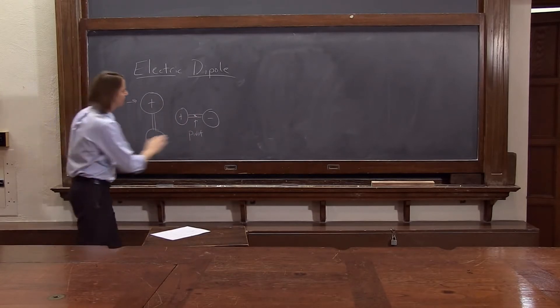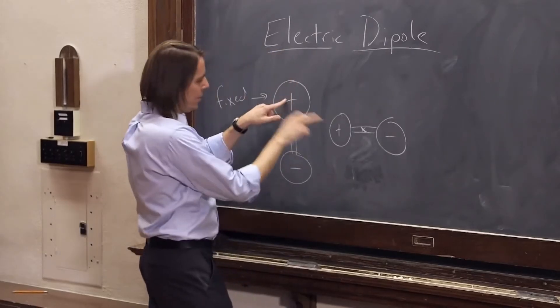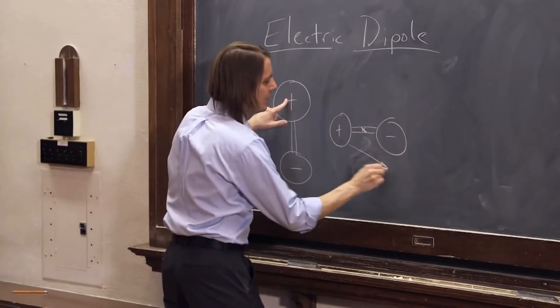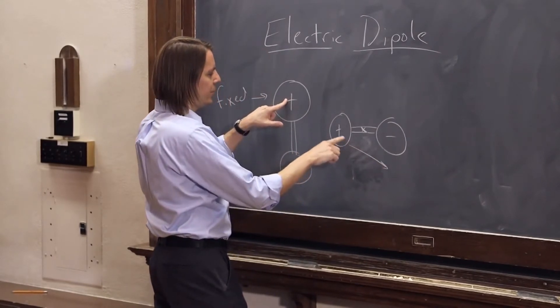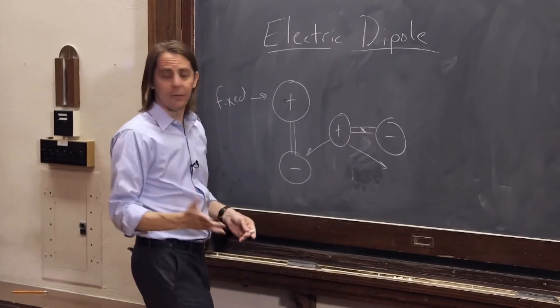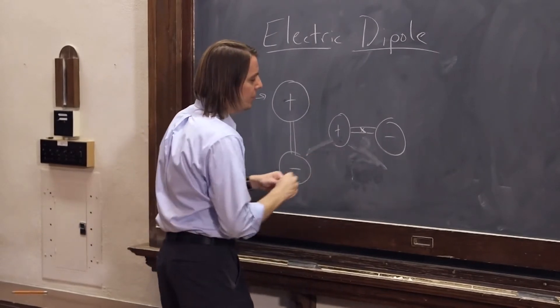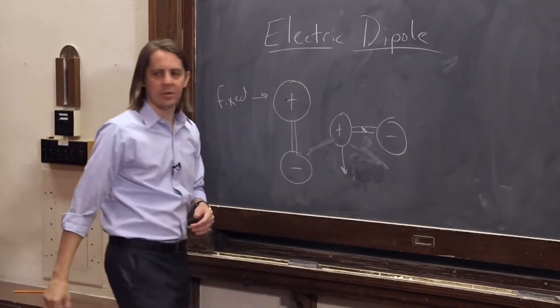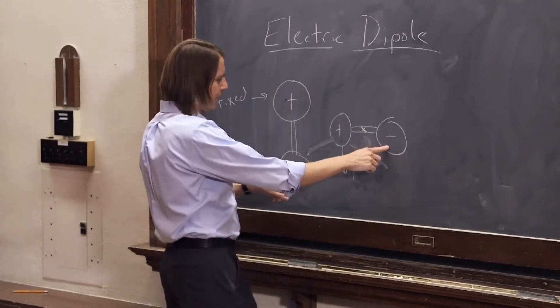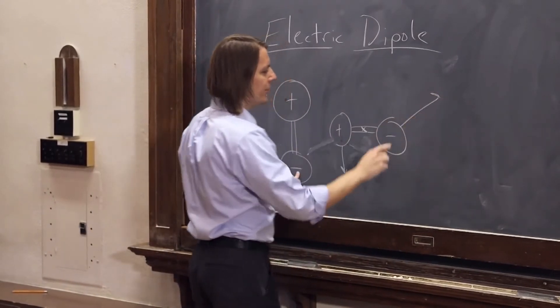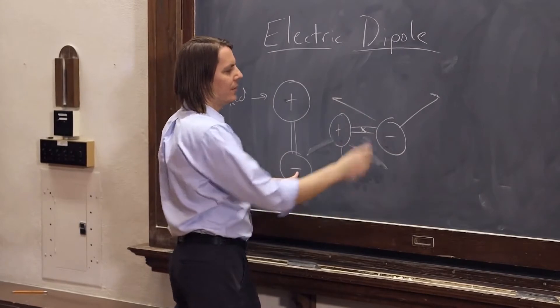So what would this thing do? It would feel a repulsive force here due to those two positive charges. It would feel an attractive force here. So the net force would be down. Together, those would want to push the positive charge down. And then the negative charge would feel a force that way, and it would feel an attractive force that way. The net force would be up.